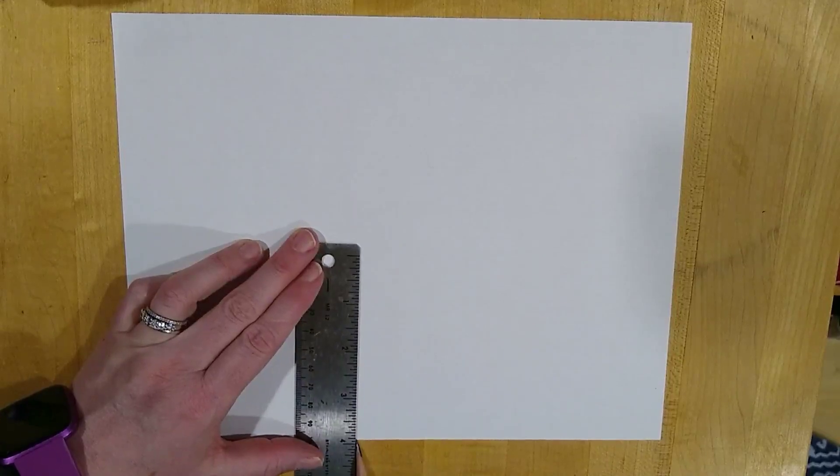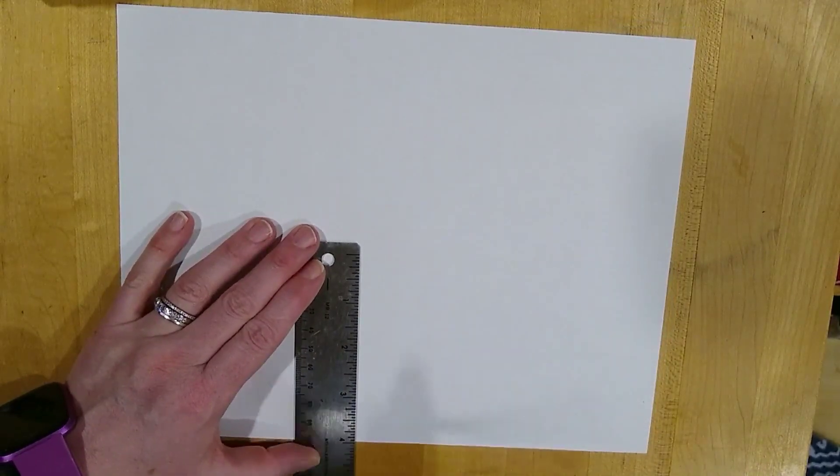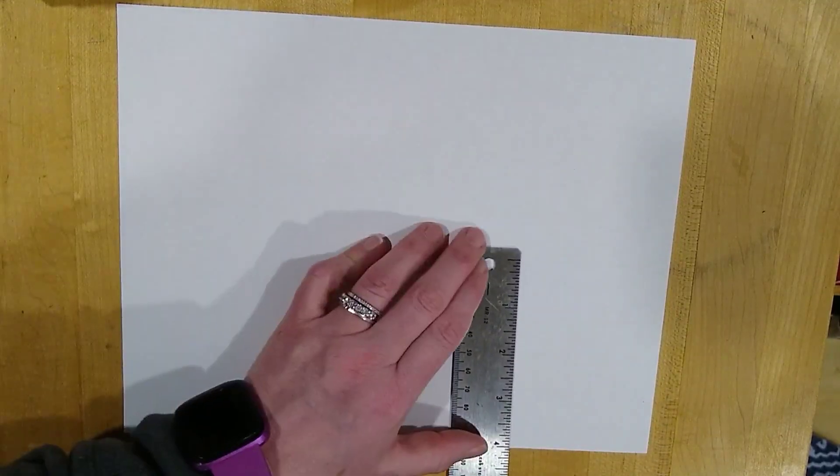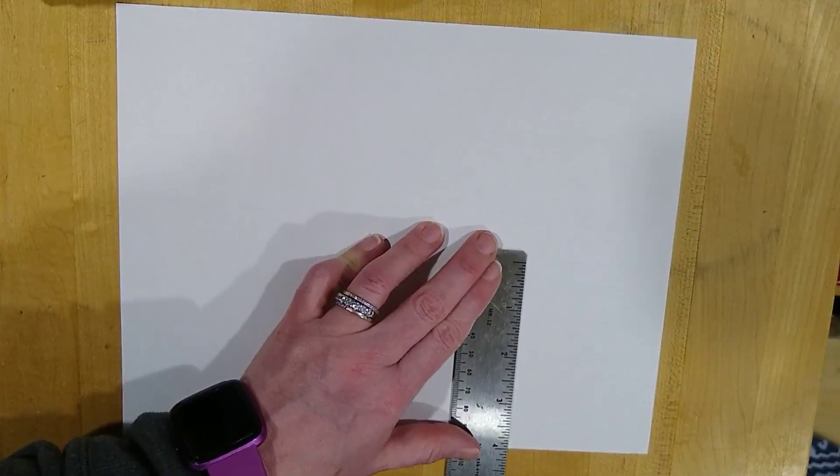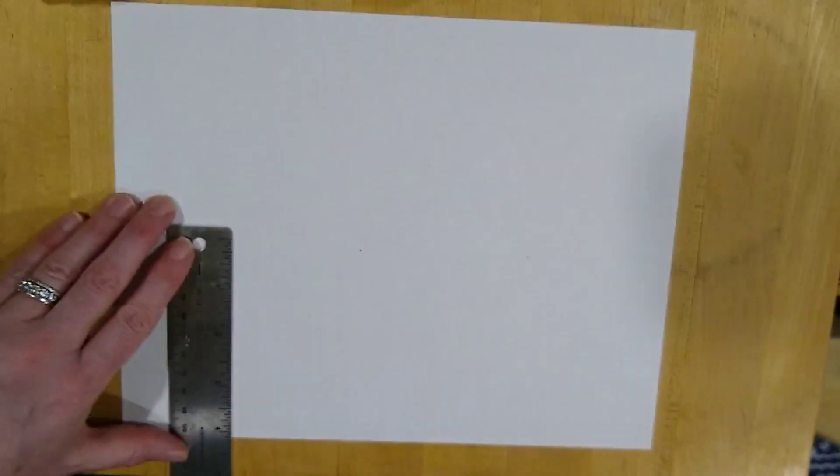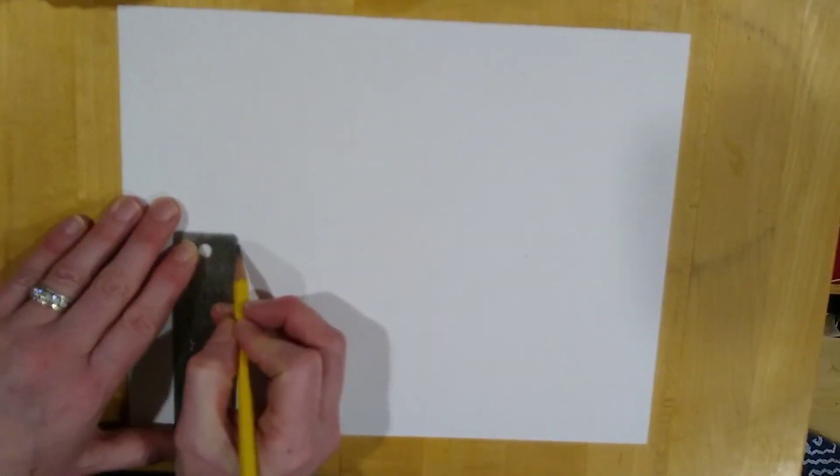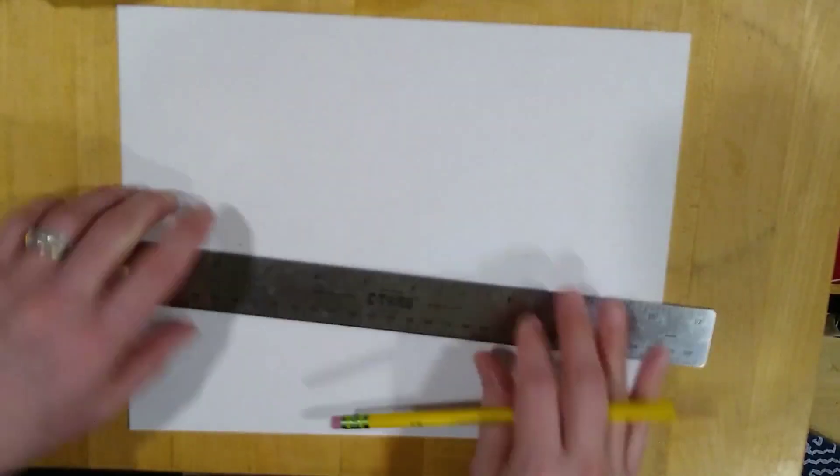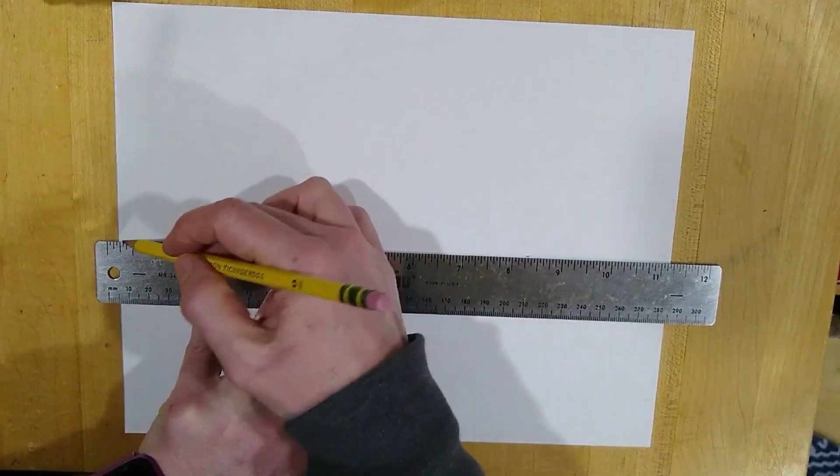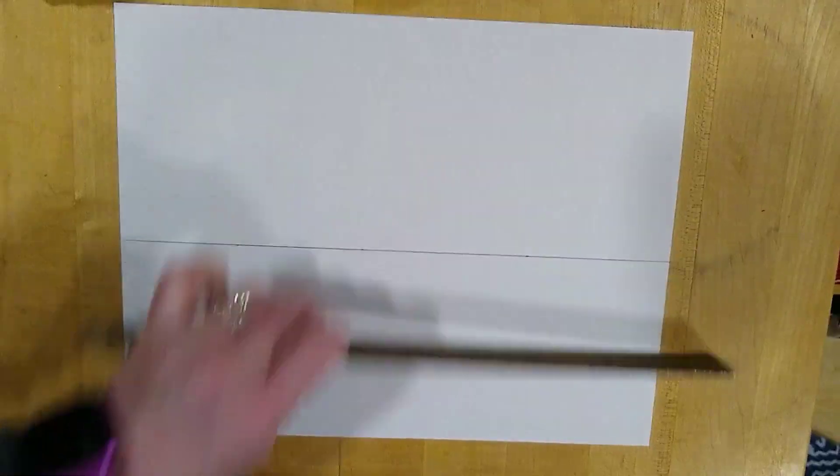So you're going to find the four inch mark on your ruler, and you're going to line that four inch mark with the edge of your paper. And you're going to mark at the zero. Make sure you know where the zero is on your ruler before you begin. And we're going to do one more mark at four inches. And we're going to line this up and do a nice, heavy, solid line. Solid lines mean cut.